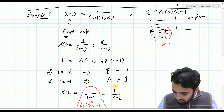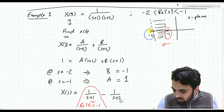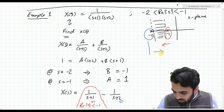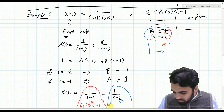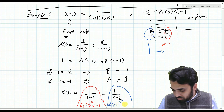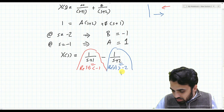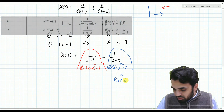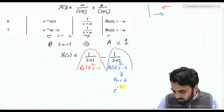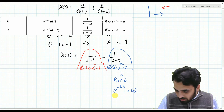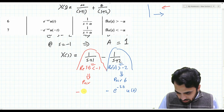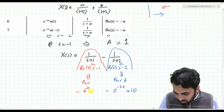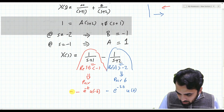For the pole at −2, the ROC is to the right of it, indicating the real part of s is greater than −2. Using pair 6 in the table, the term 1/(s+2) corresponds to e^(−2t)u(t), giving −e^(−2t)u(t). Using pair 7, the term 1/(s+1) with ROC to the left corresponds to −e^(−t)u(−t). So x(t) = −e^(−t)u(−t) − e^(−2t)u(t)... wait — that is our x(t).